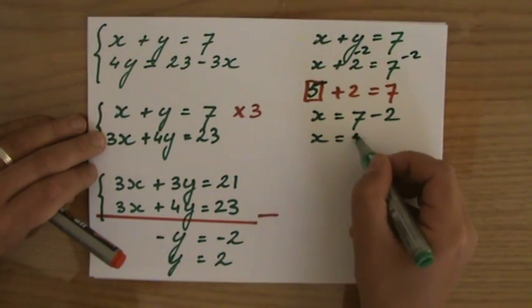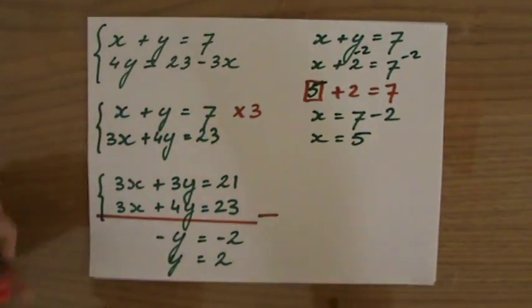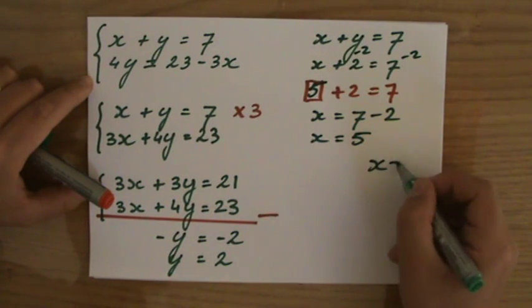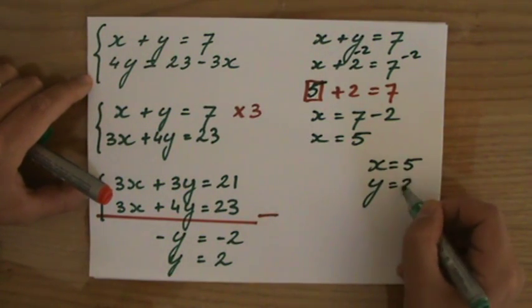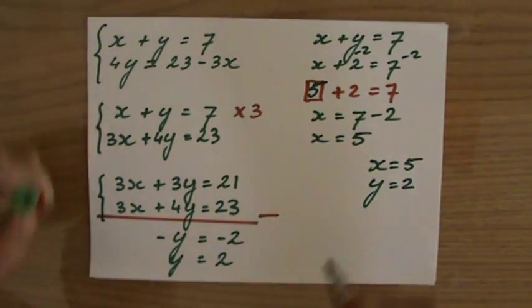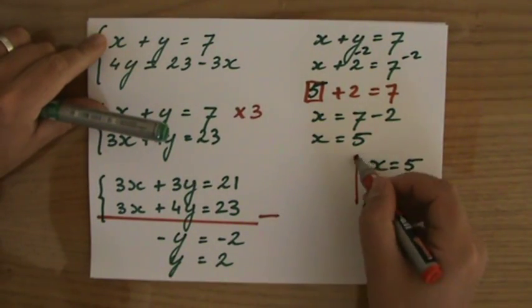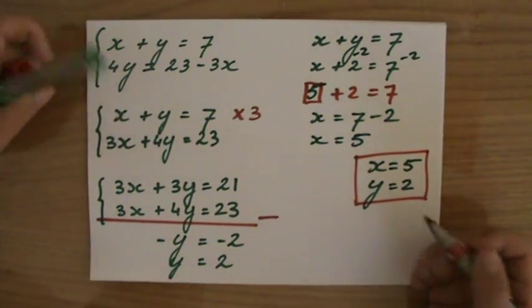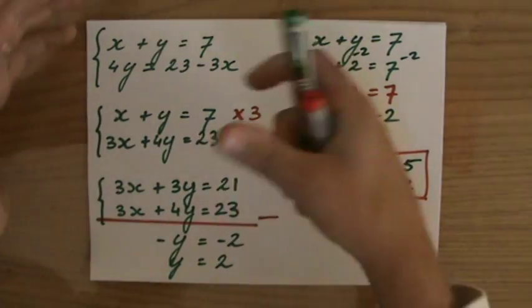Because 7 minus 2, plus 2, take away the 2, take away the 2, there x is 5. Sorry guys, getting a little bit carried away. My answer is x is 5 and y equals 2.